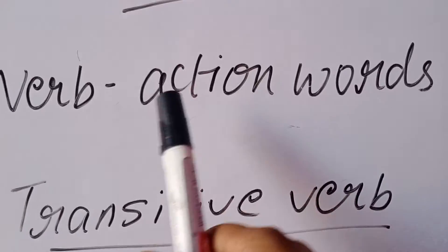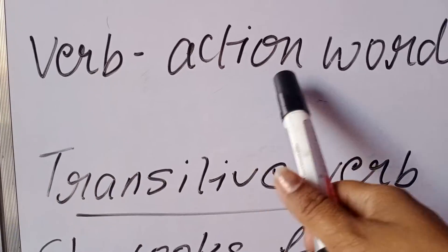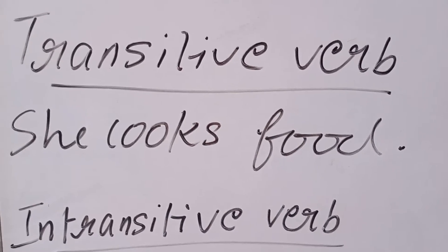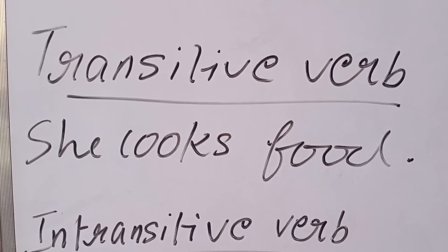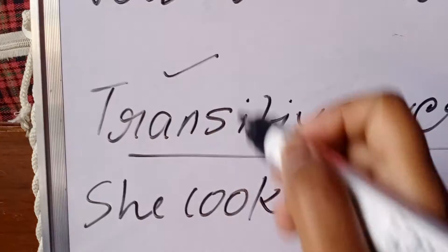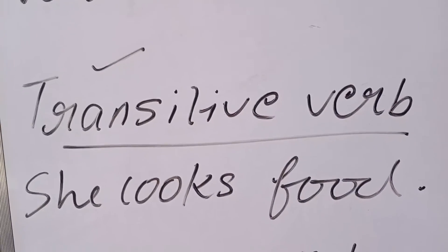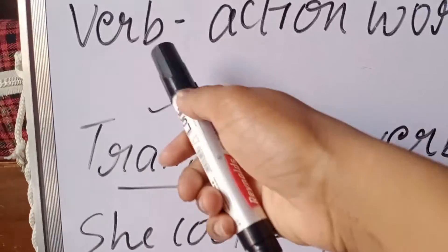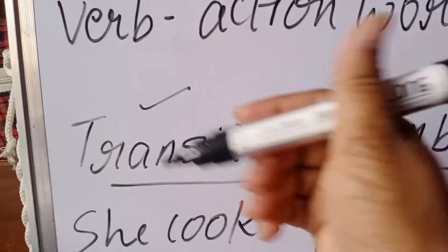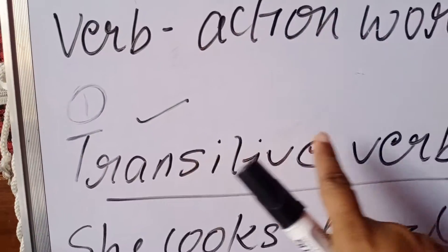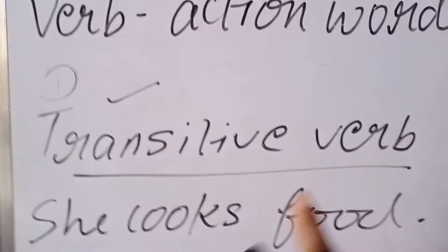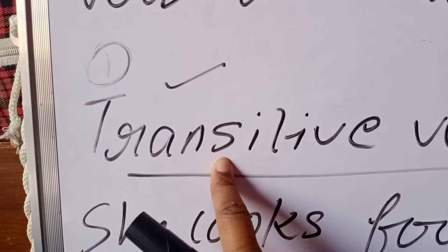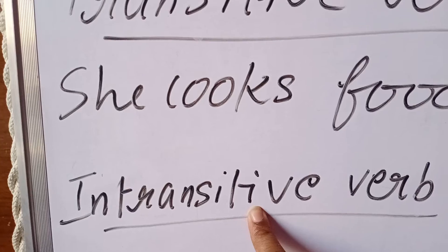Now, as you have seen, verbs are action words. There are two types of verbs you are going to learn in this topic — just as we learn in Hindi. The first one is transitive verb, and the second one is intransitive verb. Transitive, intransitive.